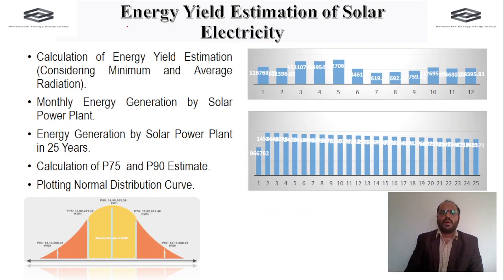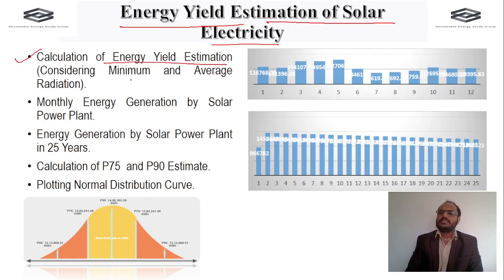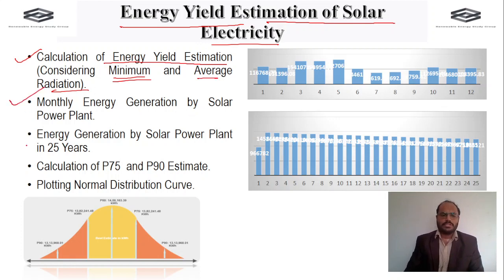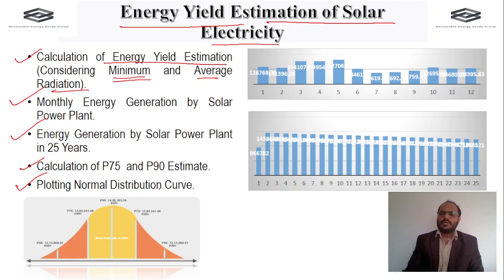Next is energy yield estimation of the solar power plant. This covers calculation of energy yield considering minimum and average radiation at the site, monthly energy generation by the solar power plant in an Excel sheet, energy generation over 25 years in Excel, calculation of P75 and P90 estimates, and plotting the normal distribution curve — all parameters relating to energy generation in kilowatt-hours.